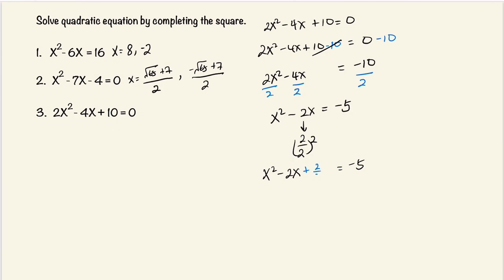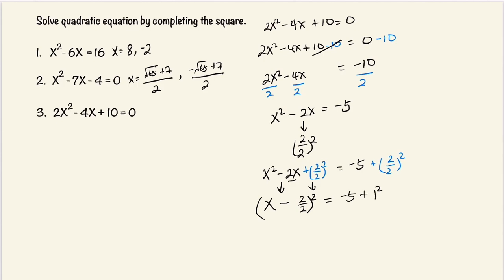We're going to add 2 over 2, squared, on both sides. This right here is now a perfect square, and we can write that as x — bring down the negative sign that's next to the coefficient of x — and bring down the 2 over 2, and square the entire thing. 2 divided by 2 is 1, and 1 squared. Now we're going to rewrite this: x minus 1, squared, is equal to negative 5 plus 1.